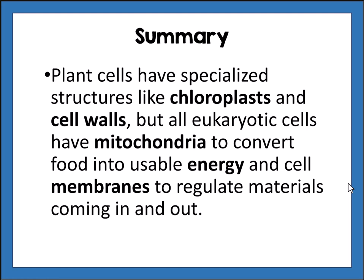In summary, plant cells have specialized structures like chloroplasts and cell walls, but all eukaryotic cells have mitochondria to convert food into usable energy and cell membranes which regulate materials coming in and out of the cell.